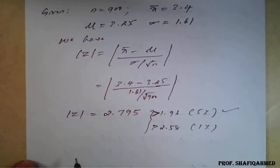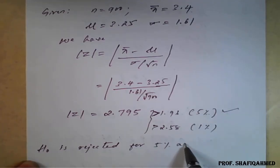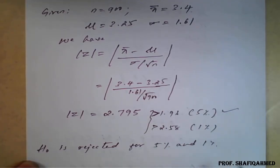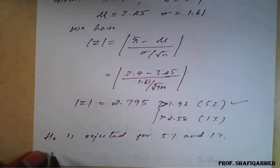Therefore, H0 is rejected for 5% and 1% level of significance.